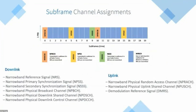Similar to LTE, we have the subframe channel assignment and signaling for the downlink and the uplink. These signals are very similar to LTE but differ a little bit in where they are and their number of subframes. On the downlink we have reference signals, primary synchronization, secondary synchronization, and broadcast channel. On the uplink we have random access channel, uplink shared channel, and demodulation.